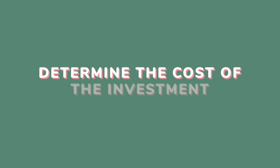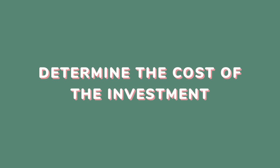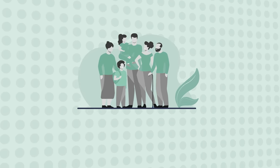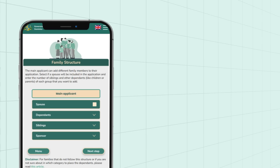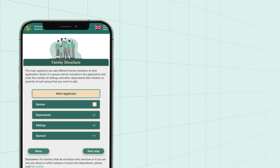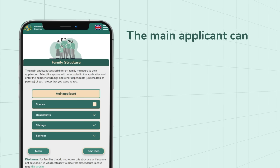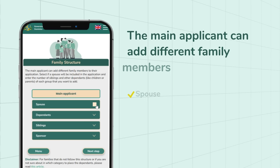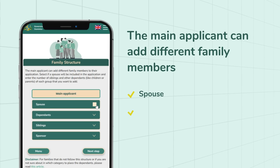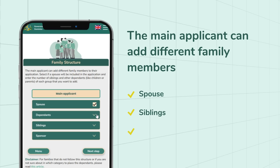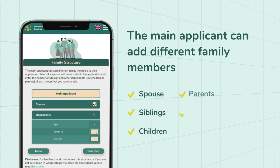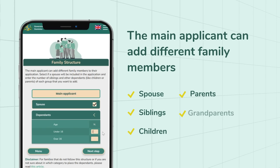Determine the cost of the investment in three easy steps. Step 1: Enter the family structure. The main applicant can add different family members to their application. You can add a spouse, siblings and other dependents such as children, parents or grandparents.